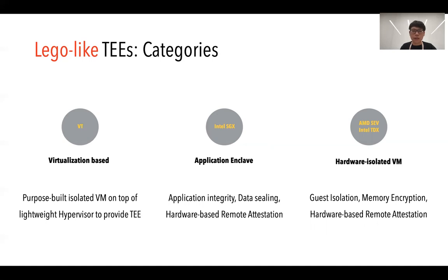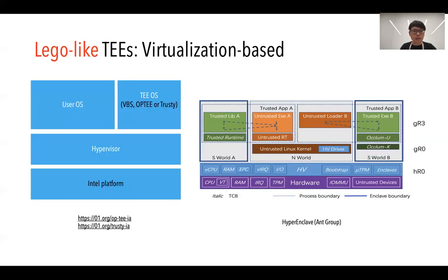Let's deep-dive into them one by one. First, let's look at virtualization-based TEEs. On the left is an architecture presented by Intel called Trusty, and on the right, at Ant Group, we have our own virtualization-based TEE called Hypervisor-Enclave. We have our root of trust lying inside the hardware, and a trusted hypervisor running on top of the hardware to provide separation between normal worlds and secure worlds by leveraging technologies like VT-d and VT-x.